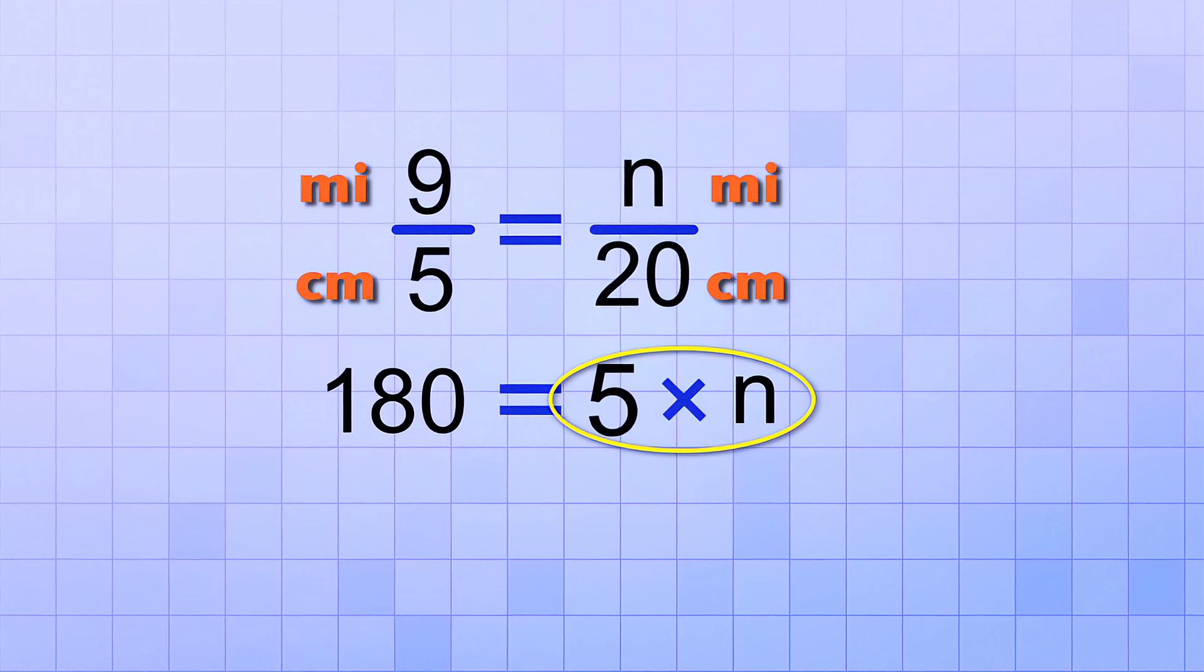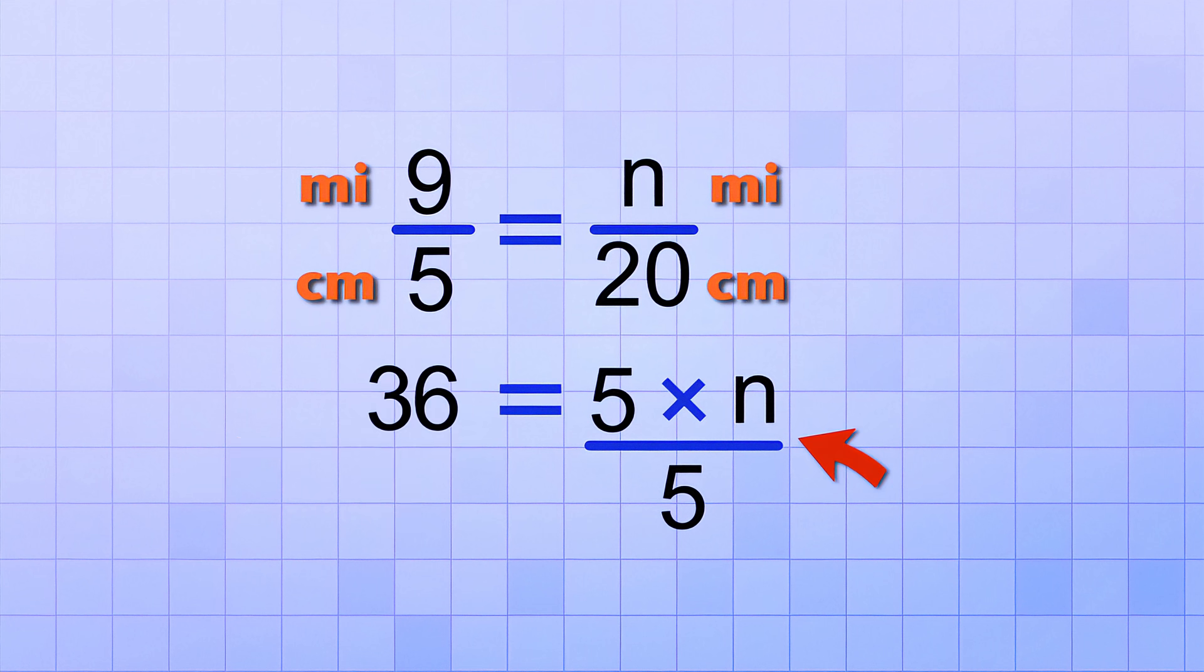On the other side, we have 5 multiplied by our unknown value, N. We can't multiply that, but we don't need to. Instead, we want to get the N all by itself. How do we do that? Well, we can't just ignore the 5 like we ignored the 1 in the last problem. Instead, to get the N by itself, all we have to do is divide both sides of the equation by the number that N's being multiplied by. In this case, that's 5. So on the first side, 180 divided by 5 equals 36. And on the other side, 5 times N divided by 5 is just N since the 5's cancel out.